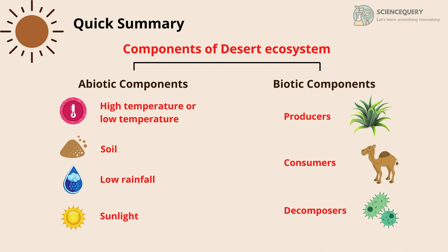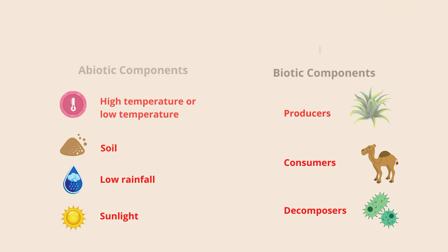Let us look at a quick summary of what we have learned. Components of the desert ecosystem are mainly divided into two types: abiotic components and biotic components. Abiotic components include high temperature or low temperature, soil, low rainfall, and sunlight. Biotic components include producers, consumers, and decomposers.